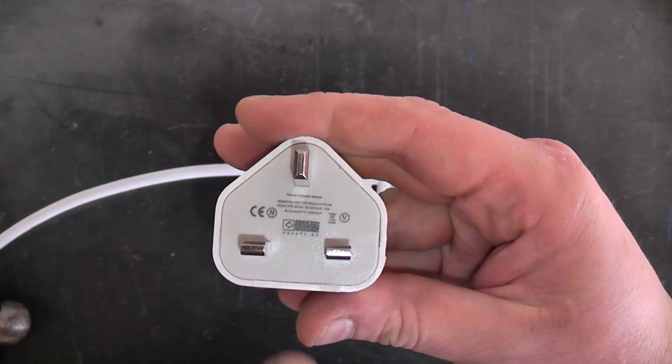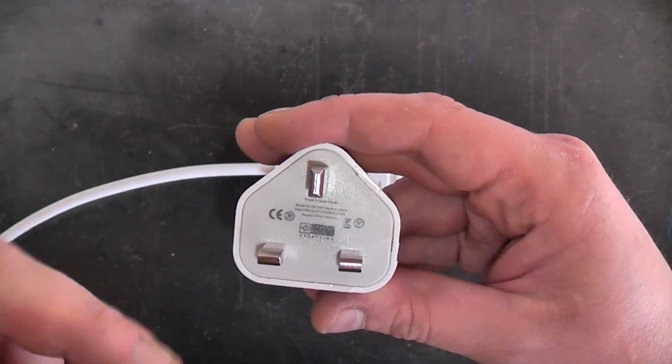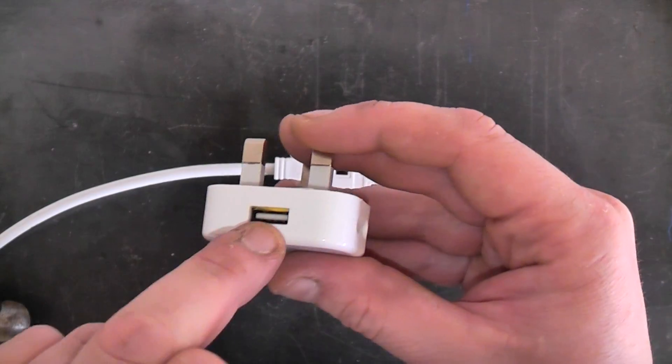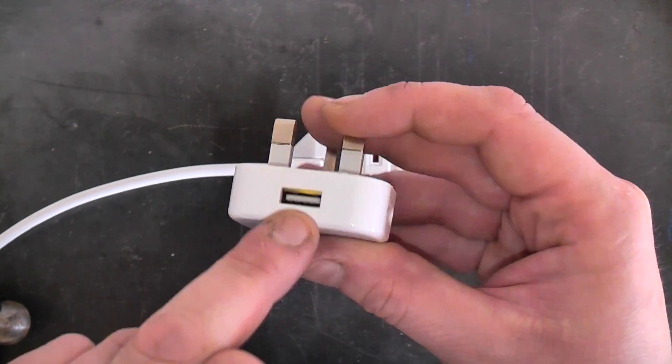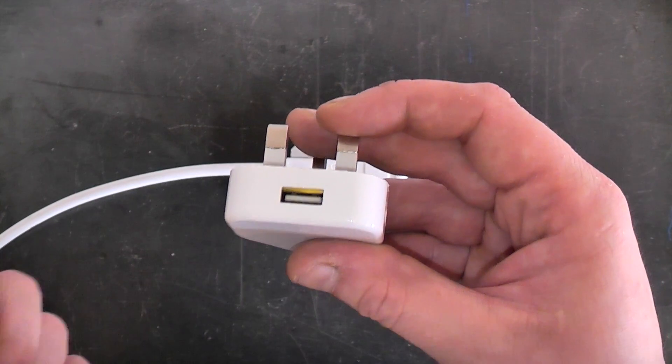What I did forget to point out in the previous video is the isolation between the primary and the secondary is good. However, those two small yellow wires actually press against the metal case of the USB. So that wasn't very good considering it's very poorly insulated.